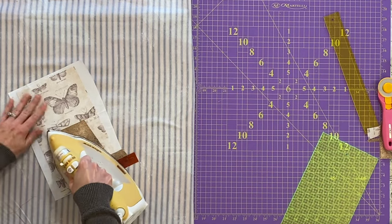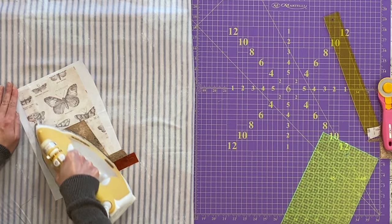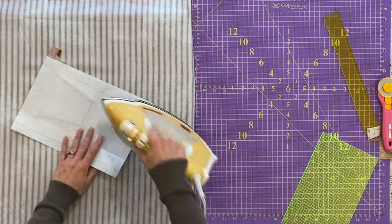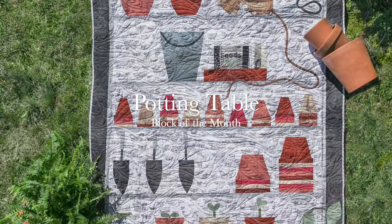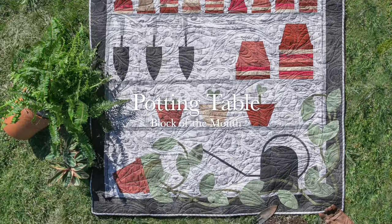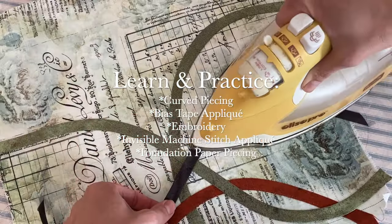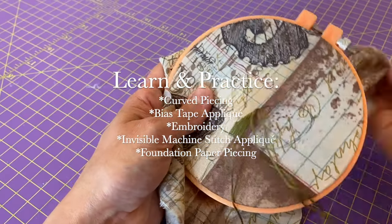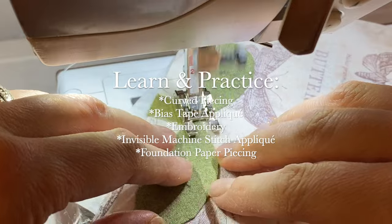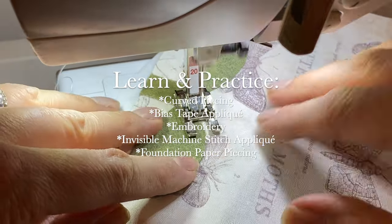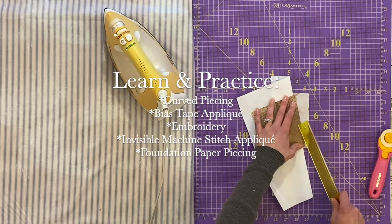Now this block is from my block of the month program called Potting Table and this is a skill building program. I will be showing you fun things like how to do curved piecing, how to do bias tape applique, a little embroidery if you'd like, invisible machine applique, and of course foundation paper piecing.